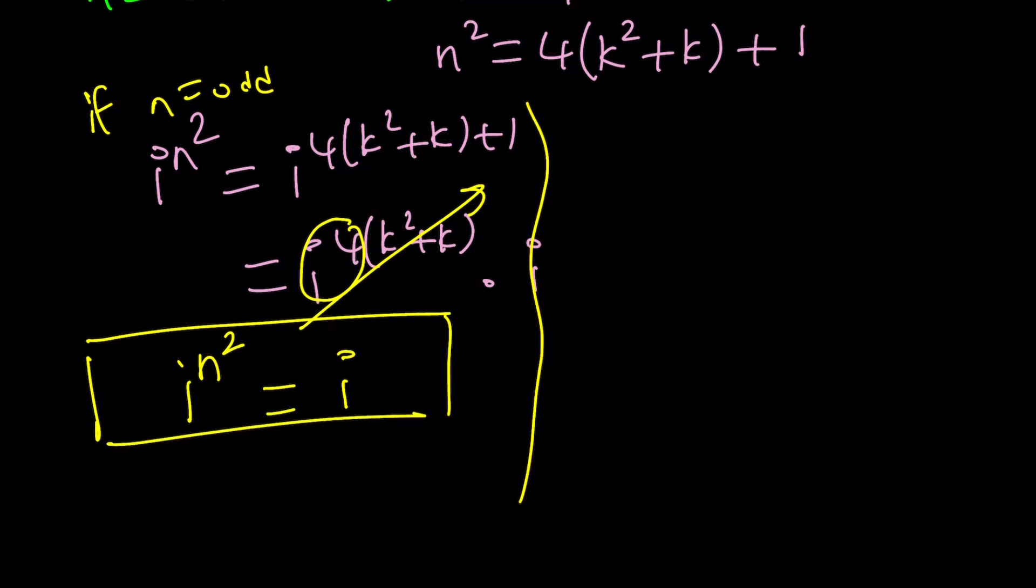What happens if n is even? If n is even, then i to the power n squared is going to be i to the power. Now we have to write it as 2k. And it's just going to be 4k squared, right?